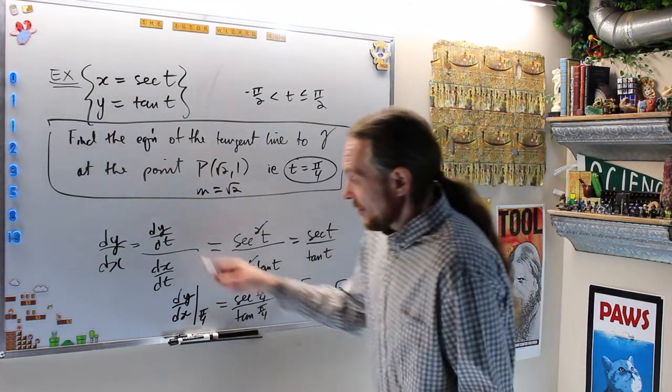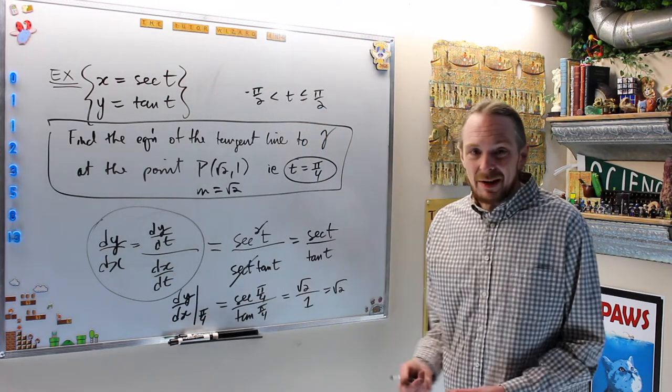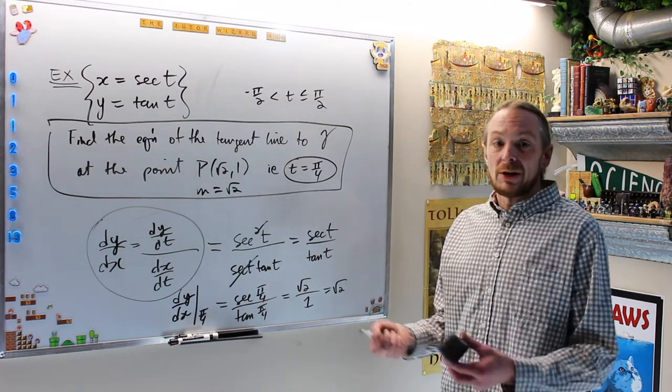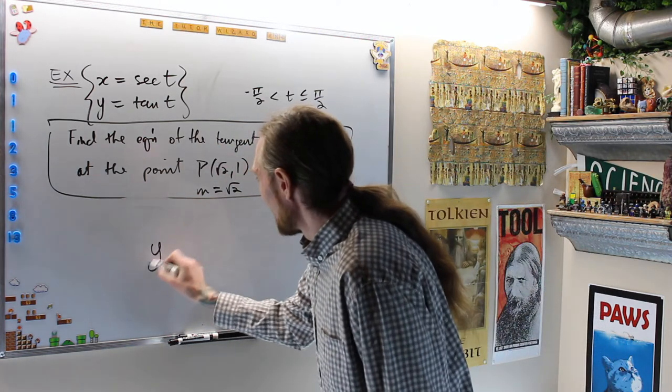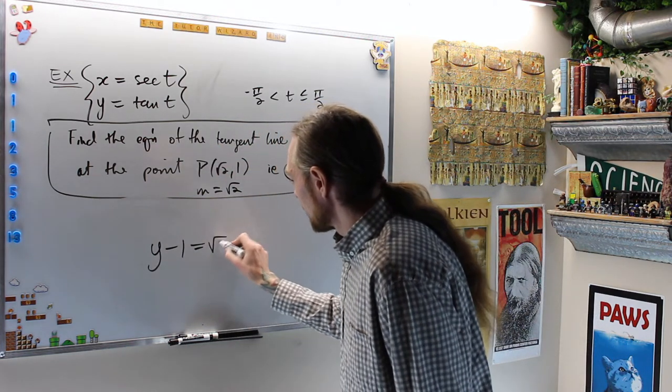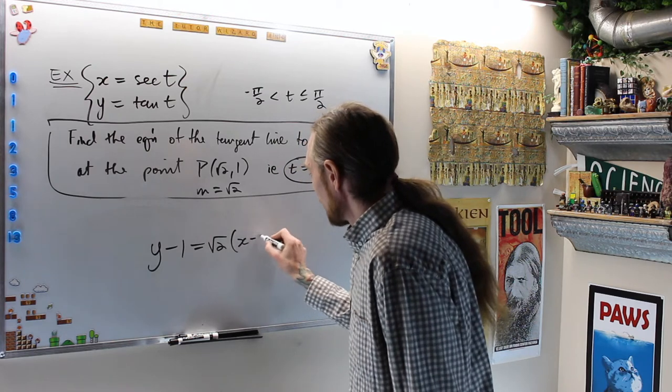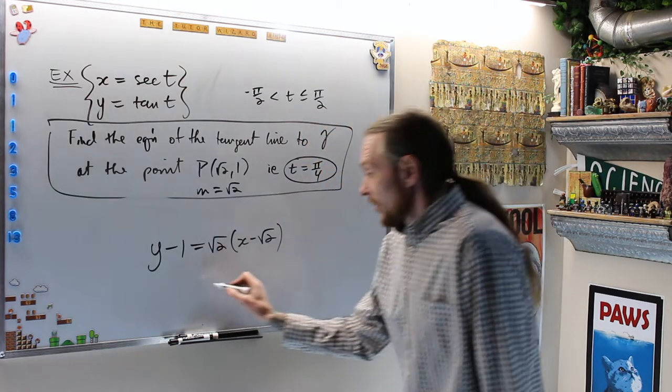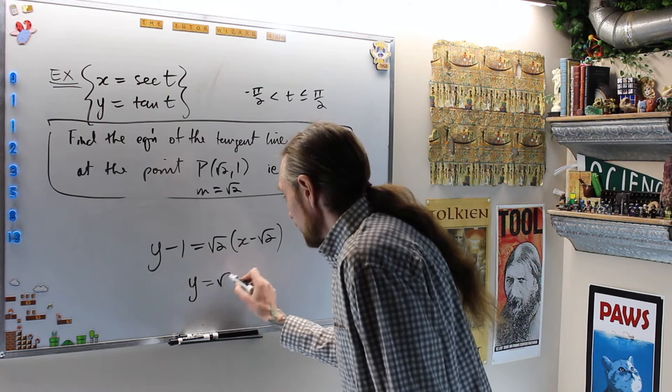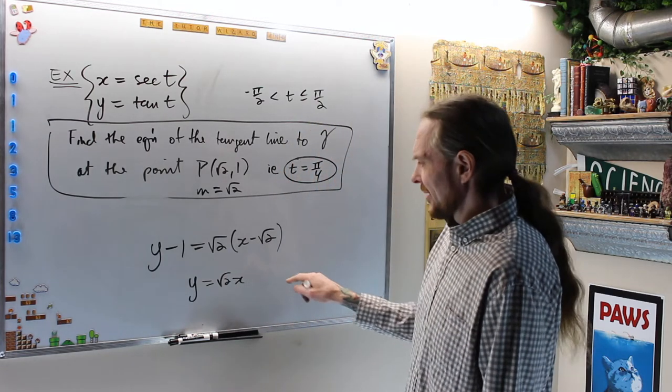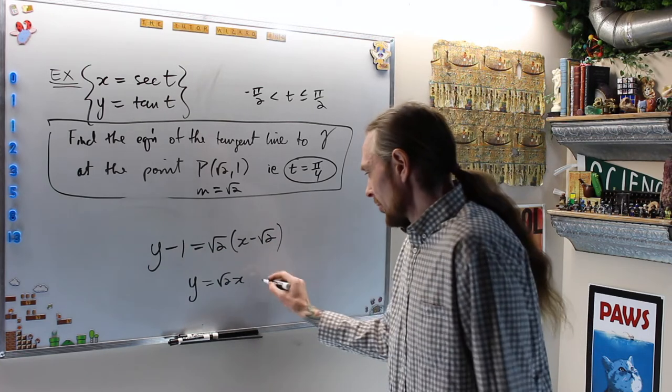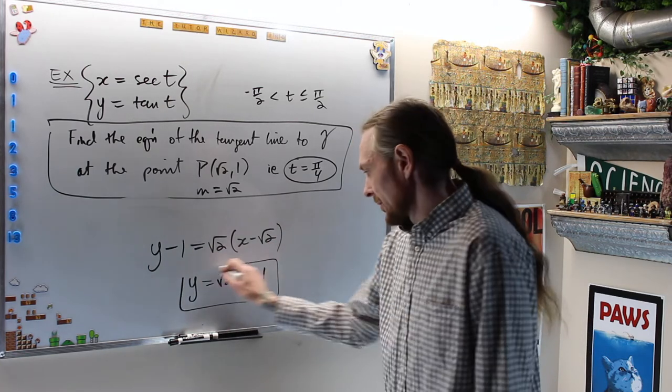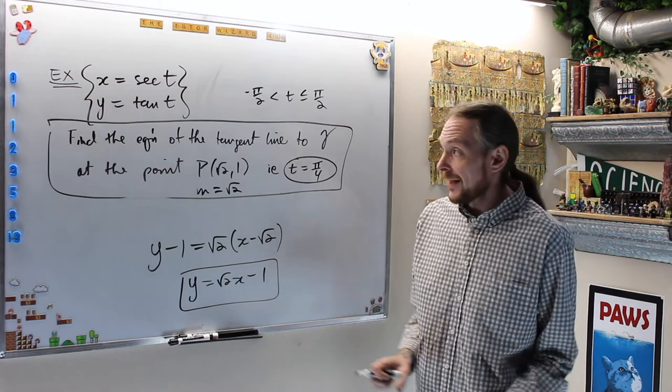What does that give me? I have a point, and now I have a slope, which is the square root of 2. I can build that equation of that line. The only thing we had was we needed to use this for the parameterization. So this tells me that y minus 1 equals the square root of 2 times x minus root 2, or you can write this as y equals root 2x. Don't skip steps, I'm skipping the steps. What do I get? Root 2 and root 2 is negative 2 plus 1 is minus 1.